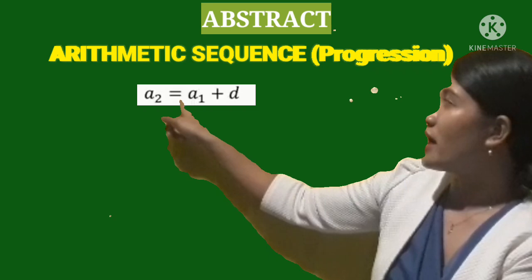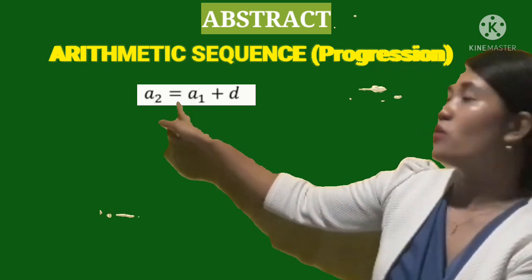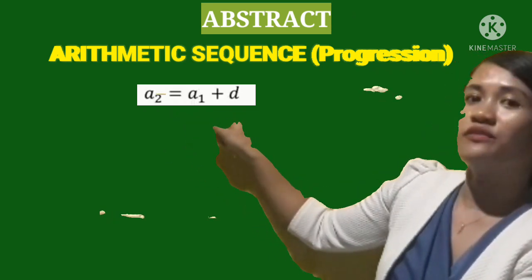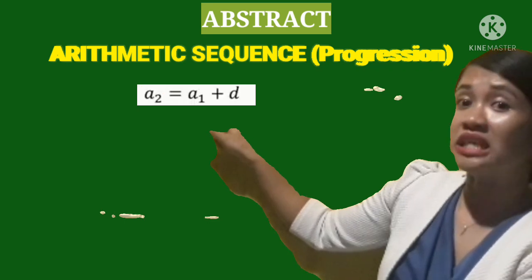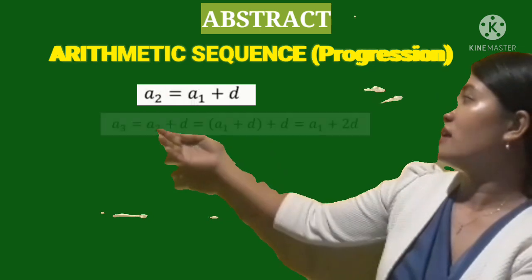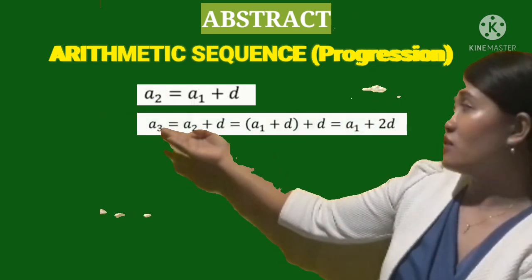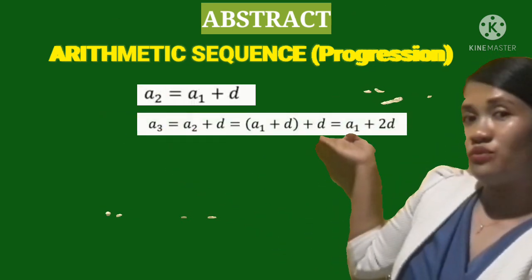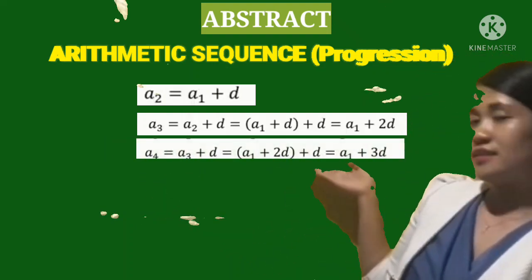Take note that your n must be deducted by 1 and that is the value of your numerical coefficient of d. So take note, 2, your coefficient here, the numerical coefficient of d is 1. 3, the numerical coefficient of d is 2. And then the 4 is 3.